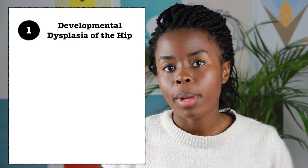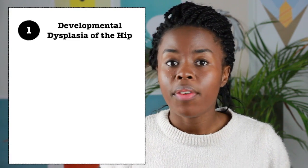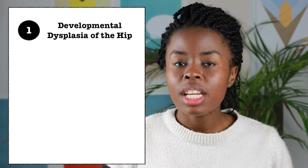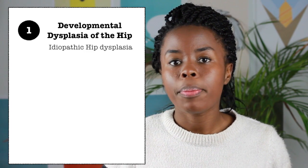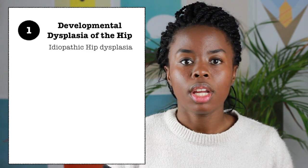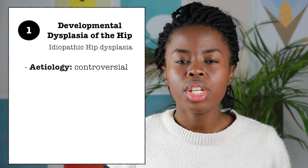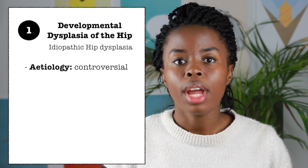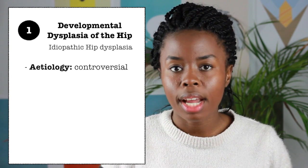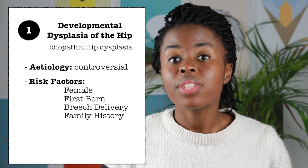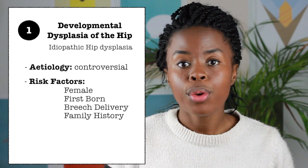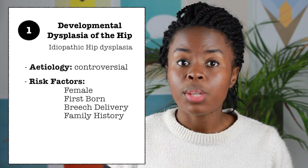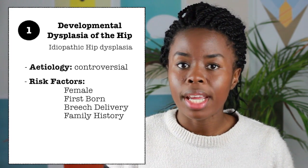DDH, or developmental dysplasia of the hip, affects children between the ages of 1 and 5. It is an idiopathic type of hip dysplasia. Its etiology is controversial but is linked to mechanical factors in utero and ligamentous laxity. Risk factors include being female, first-born, breech delivery, as well as having a family history.